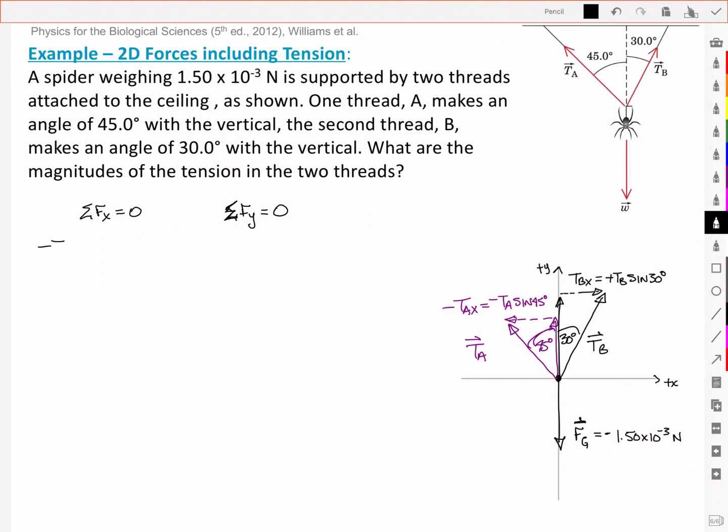In the x components I've got a negative Ta sine of 45 degrees and I've got a positive Tb sine of 30 degrees.